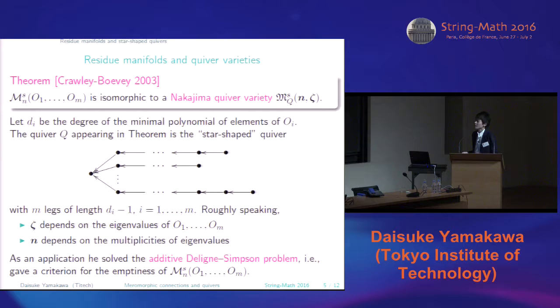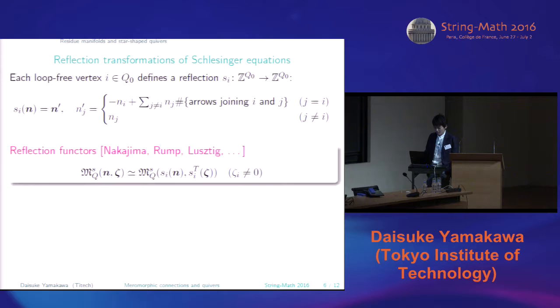So using this result, Crawley-Boevey solved the additive Deligne-Simpson problem. So in other words, he gave a criterion for the emptiness of the residue manifold. So because Crawley-Boevey already had the criterion for the emptiness of the quiver variety, so using this result, he immediately gets such a result.